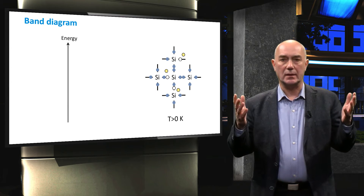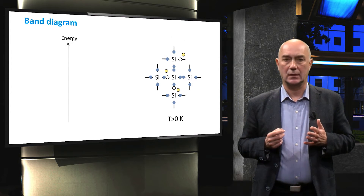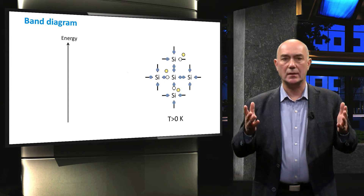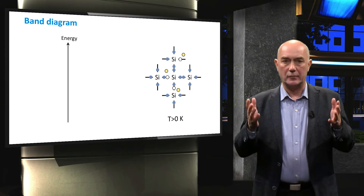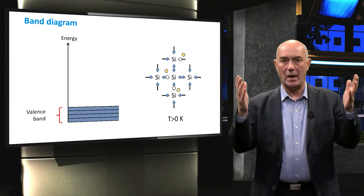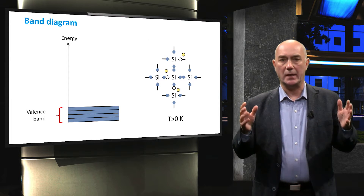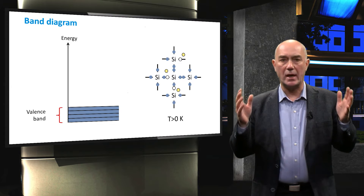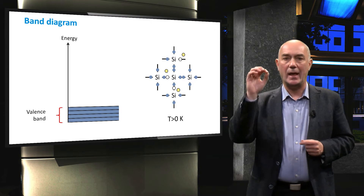The y-axis in a band diagram represents the energy level of valence electrons in a semiconductor. In an isolated silicon atom, electrons are allowed to have only discrete energy values. However, the periodic atomic structure of a silicon crystal results in a range of discrete energy states for electrons. The allowed energy levels for bound valence electrons are indicated by the blue area. This band of allowed energies is known as the valence band, which comprises the energy levels of all valence electrons in a semiconductor material at absolute zero.